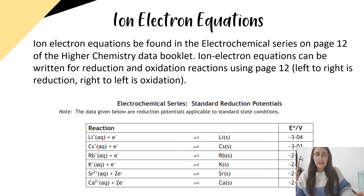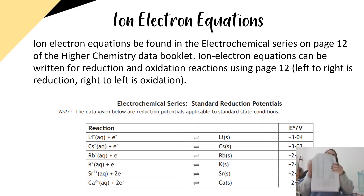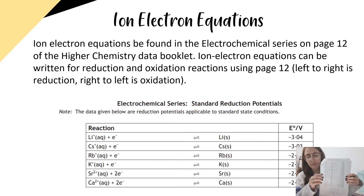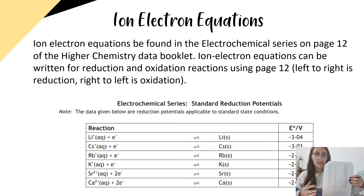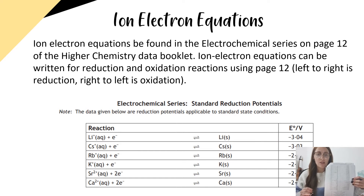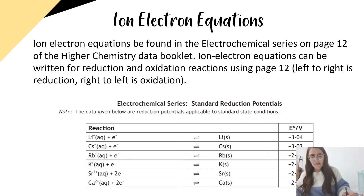We can find the ion electron equations for oxidation and reduction on page 12 of the data booklet. An ion electron equation is just an equation which shows a compound or an atom losing or gaining electrons — the ion electron part means that the equation contains both ions and electrons. You can see I've got a little bit of the data booklet copied onto this slide here.